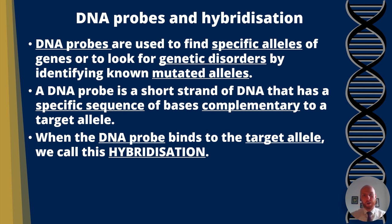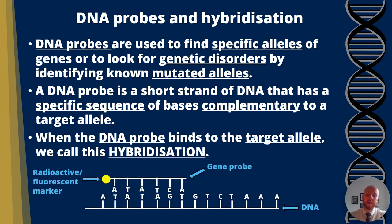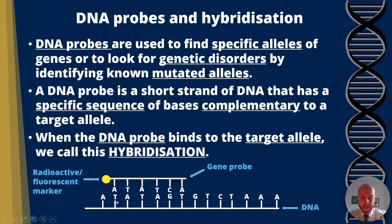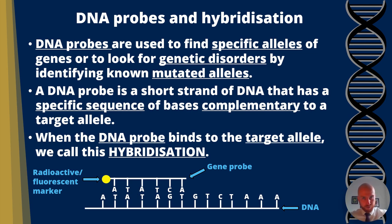Think of a hybrid car — that's petrol and electric, two different technologies coming together. In this example, we can see the target allele, or the DNA of the patient, at the bottom, and the gene probe at the top. Where there's a T on the patient's DNA, there'll be an A on the gene probe — they're complementary. In addition to that, we can tag it with a fluorescent or radioactive marker, and that means wherever the gene probe binds, it will indicate the location in the patient's DNA where that allele is present.